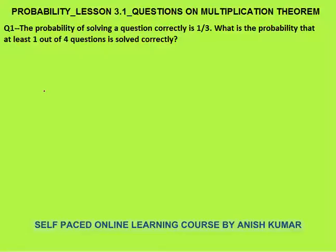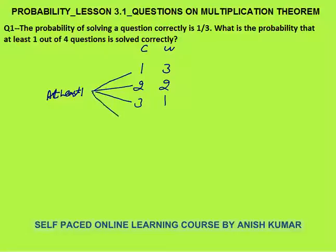At least 1 means that minimum 1 to maximum 4 questions you can solve. Either you have solved 1 question correctly and 3 questions are wrong, or 2 questions are correct and 2 are wrong, or 3 are correct and 1 is wrong, or all 4 are correct and 0 are wrong.